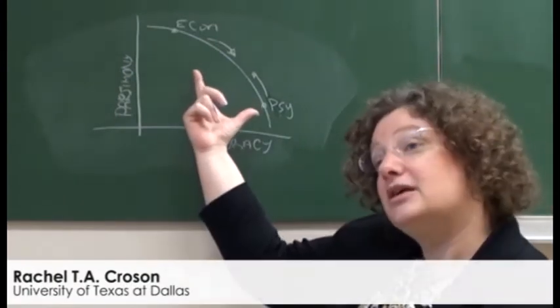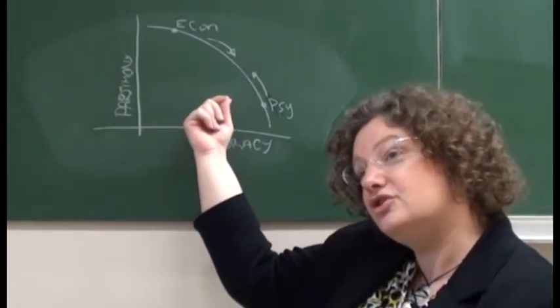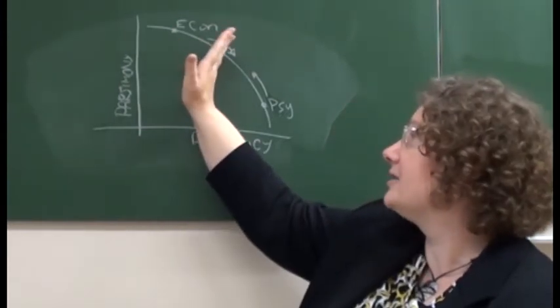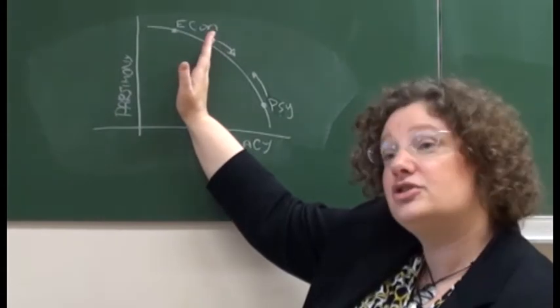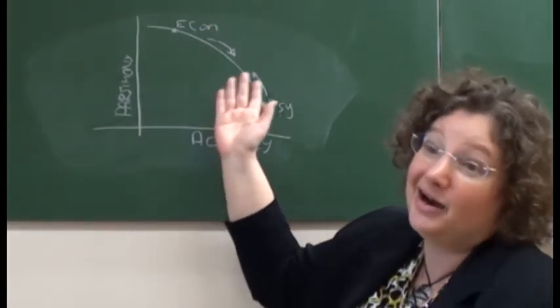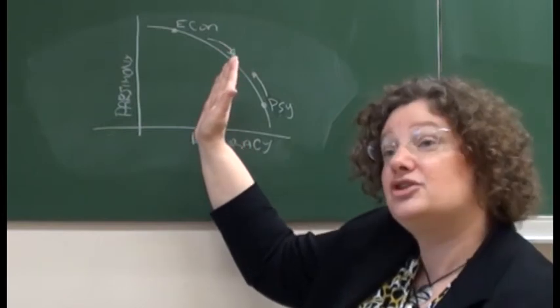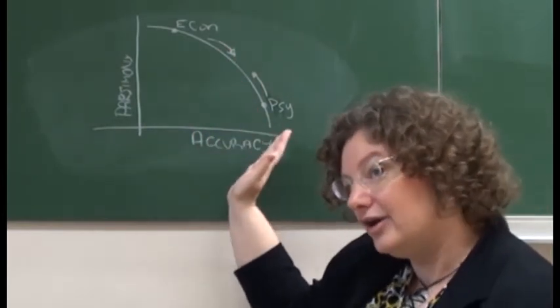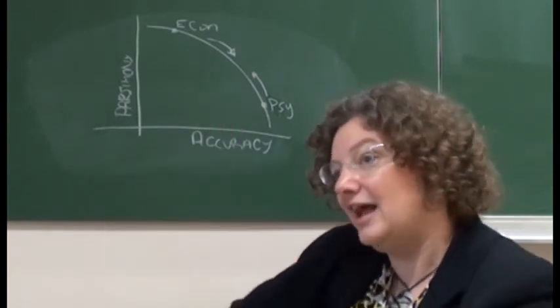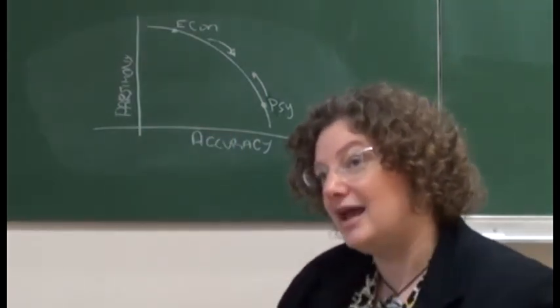And what behavioral economics does, really, is try to push these two together. So it takes economics and moves it in this direction by saying you're going to give up a little bit of parsimony, in exchange you're going to get a lot of accuracy. And it also moves psychology in this direction too. It says let's be willing to give up a little accuracy in order to get a lot more parsimony and get a lot more situations where we can make a prediction.